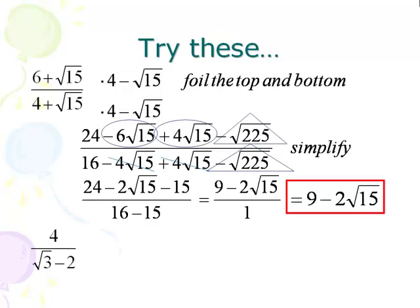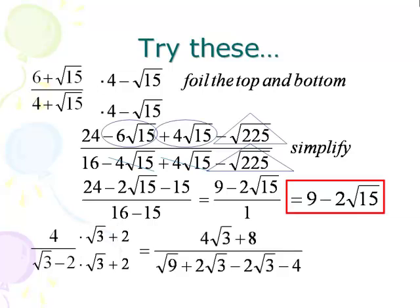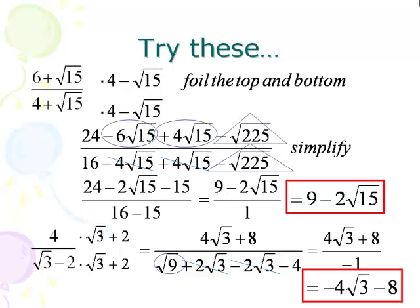Try the next one — pause until you're ready. We multiply top and bottom by the conjugate of the bottom, which is square root of 3 plus 2. On the top, distributing 4 to both terms gives 4 square root of 3 plus 8. On the bottom, FOILing gives square root of 9 plus 2 square root of 3, minus 2 square root of 3, minus 4. Square root of 9 becomes regular 3, the middle terms cancel, and 3 minus 4 is negative 1 on the bottom. Dividing: 4 square root of 3 over negative 1 is negative 4 square root of 3, and 8 over negative 1 is negative 8. Final answer: negative 4 square root of 3 minus 8.